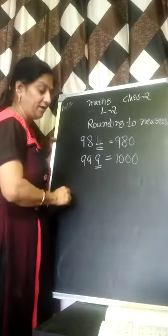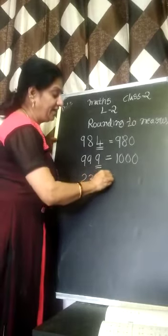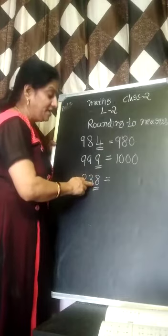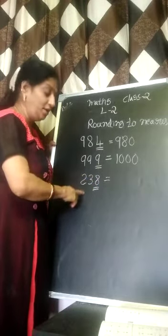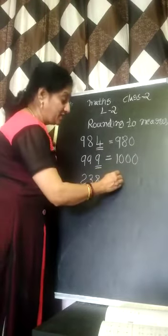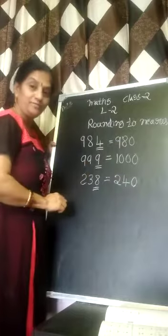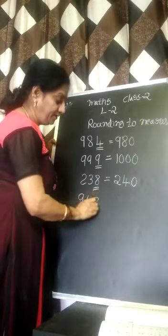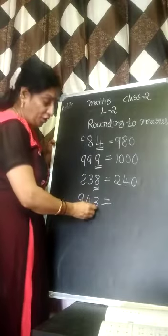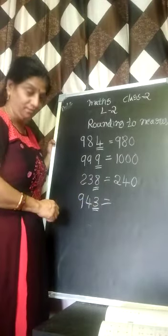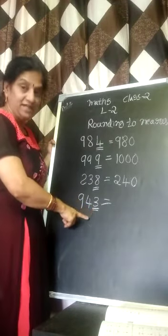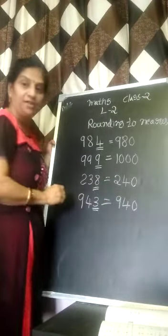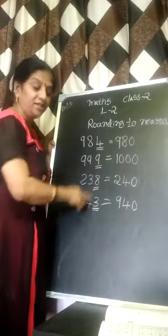Now I am going to show you another one. For example, 238. See here — you have to concentrate on the ones place. It is greater than 5, so we are moving to the next tens — that is 240. So another one: 943. You are concentrating on 3, the ones place. Is it greater or less than 5? Yes, it is less than 5, so we are going to write 940. This is the round off to tens.